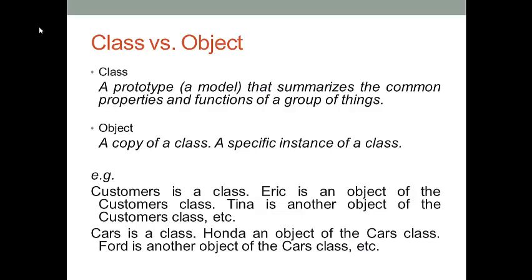They are a class and an object. We call a model that summarizes the common properties and functionalities of a group of something a class. We call a copy from a class an object. For instance, we can treat customers as a class because all customers have some common properties — all of them have a name, a mailing address, and so on. Each individual customer in this class population is an object. Eric can be considered as an object of the customer class. Tina is another object of the customer class, and so on.